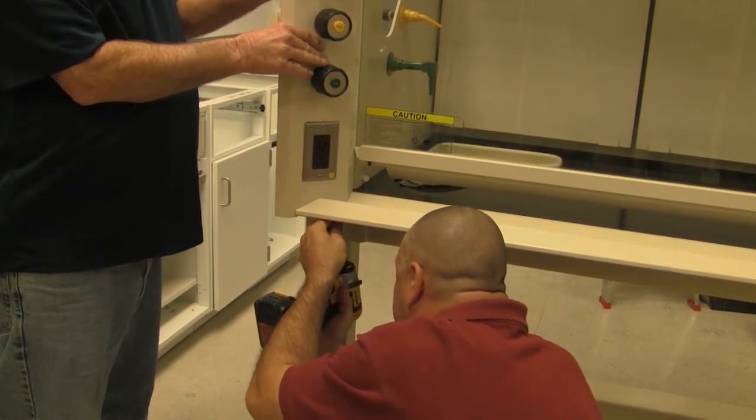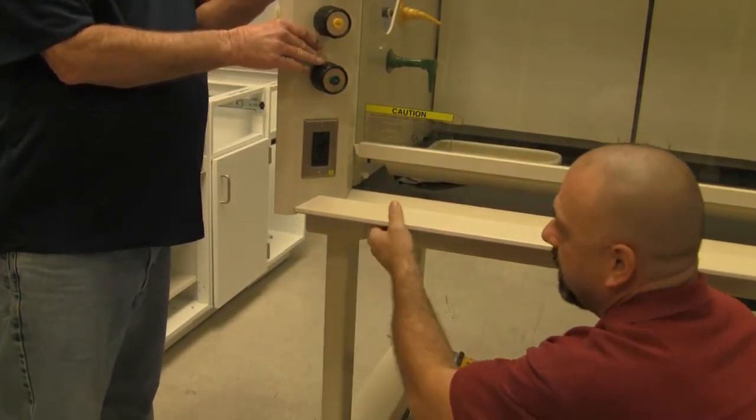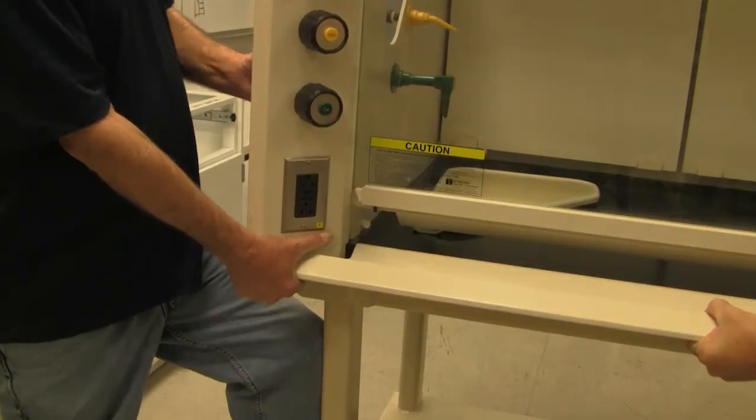Remove the screw on one side of the airfoil that holds it to the side of the hood. Then pull the side of the hood until you have enough space to remove the sash.